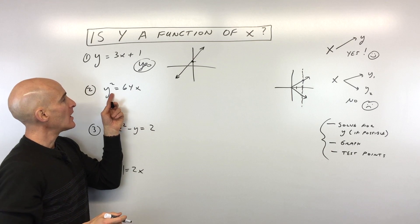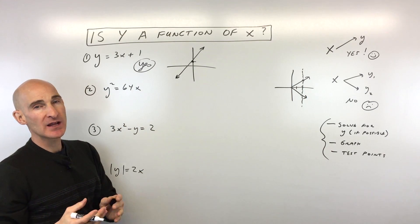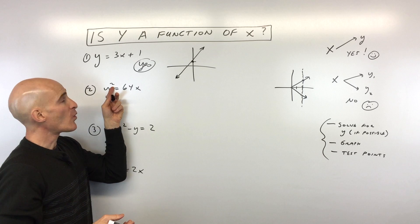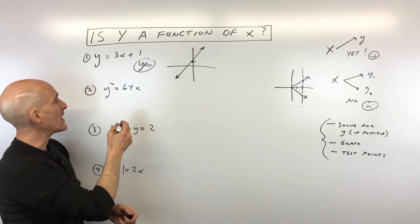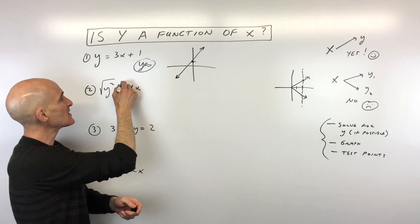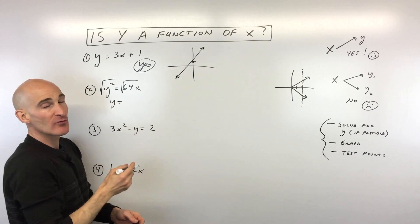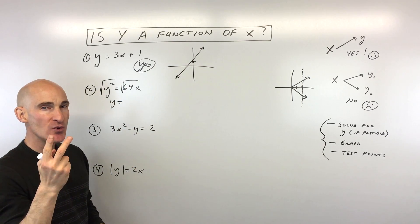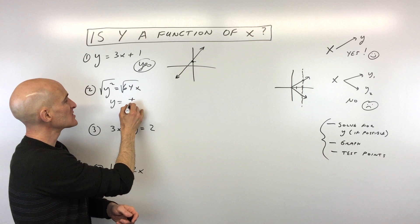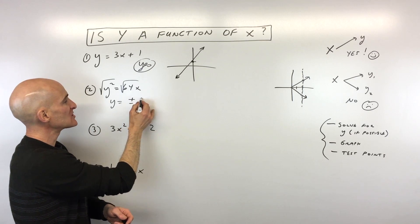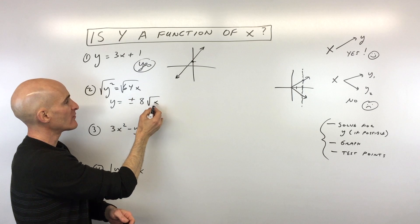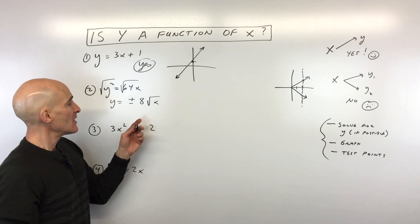Okay, let's look at the next one, number two. y squared equals 64x. Now, in this case, you can see this is y squared. We want to solve just for y. So what I'm going to do is take the square root of both sides. Remember, when you take the square root of both sides of an equation, you actually get two answers, right? Plus or minus. So this is plus or minus. Square root of 64, we know, is 8. And we're left with the square root of x. We can't really simplify that.